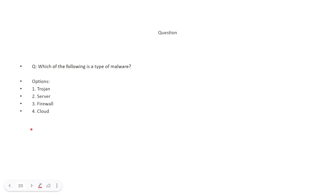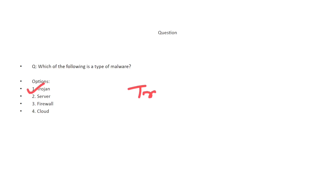Which of the following is a type of malware? The options are: Trojan, frozen server, firewall, and cloud. The correct answer is option A — Trojan.